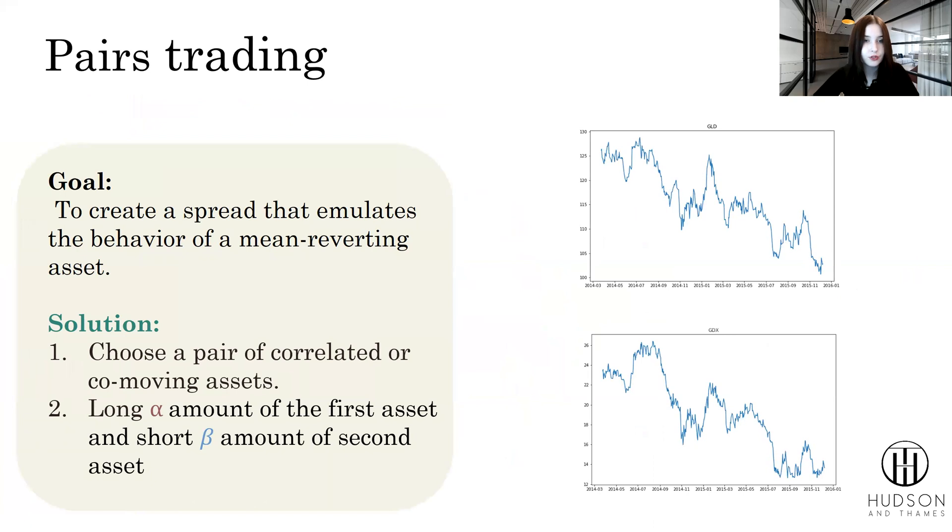The goal of pairs trading is to create a spread that emulates the behavior of a mean reverting asset. Our solution is to first choose a pair of correlated or co-moving assets, like you see on the screen. We've chosen gold and GDX indices as our exemplary data.